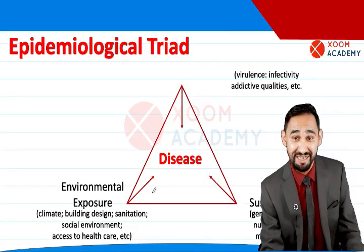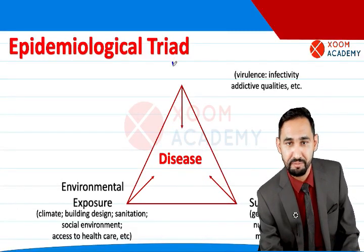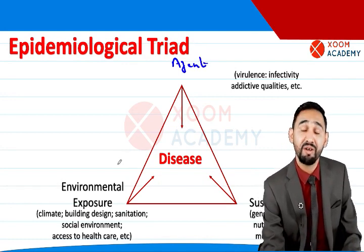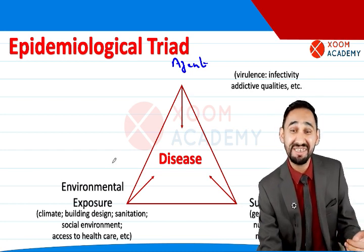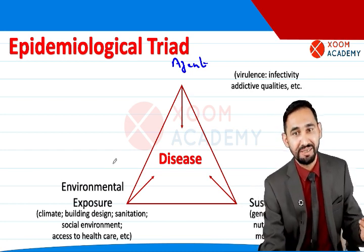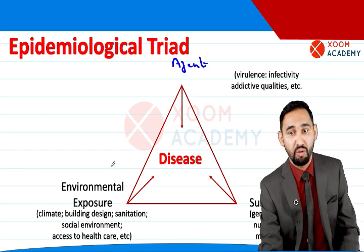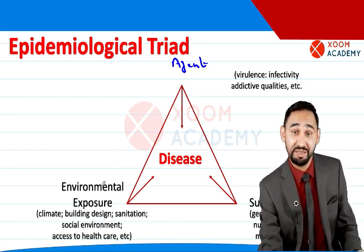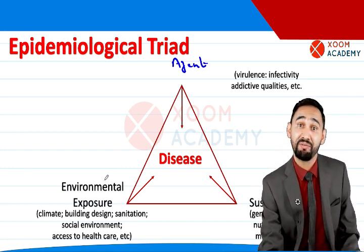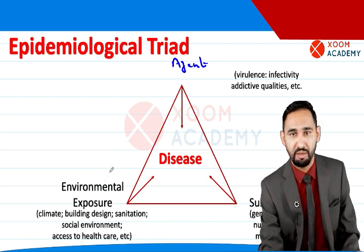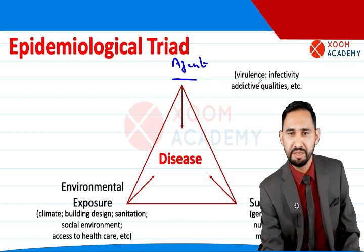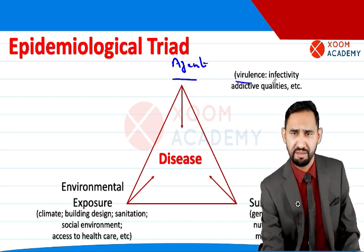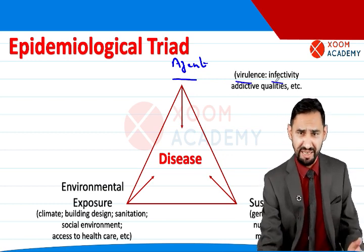We discuss the epidemiological triad or triangle — three factors: agent, host, and environment. When they combine and interact, they produce disease. The agent has certain characteristics, and there are certain environmental factors. All these affect the health of the community. For example, if the agent is virulent, it spreads, it is infective, or it can cause a disease.